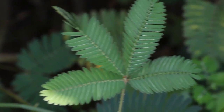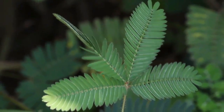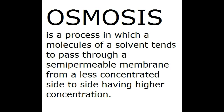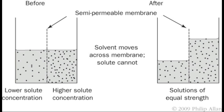So let's get into it. The mechanism of this action can be understood easily through a process called osmosis. I know most of you already know about osmosis, but for those who don't: osmosis is a process in which the molecules of a solvent tend to pass through a semi-permeable membrane from the less concentrated side to the side having higher concentration. The purpose of osmosis is to maintain equal concentration on either side of the solution.